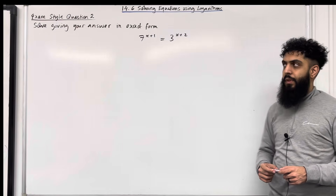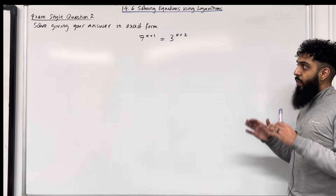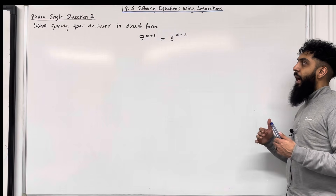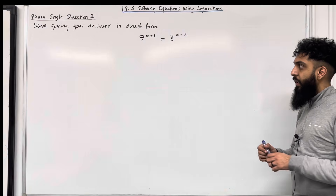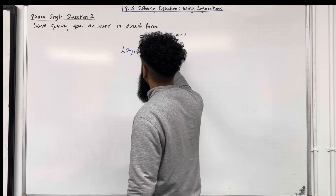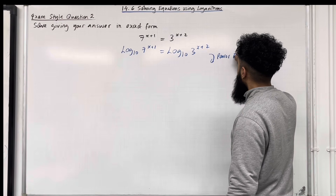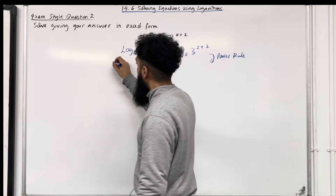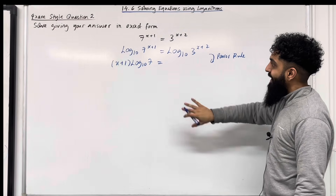Moving on to exam style question 2. Solve giving your answer in exact form: 7 to the power x plus 1 equal 3 to the power x plus 2. What we need to do here is apply logarithms on both sides in order to bring down the power using the power rule for logarithms. As a standard, we're going to take log base 10. We could take any other base, but as a standard we'll take log base 10. So we apply log base 10 on both sides of the equation, then use the power rule to bring down the powers. Over here we've got power x plus 1, which we can bring down in front of the logarithm, and over here we've got power x plus 2, which we can also bring down in front of the logarithm.